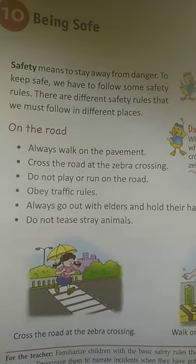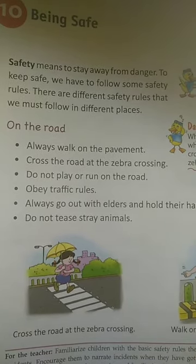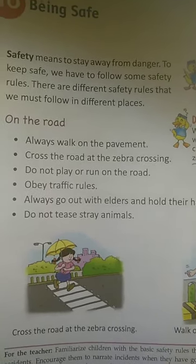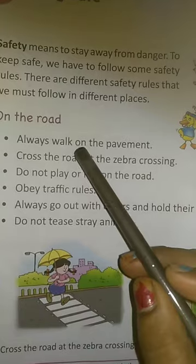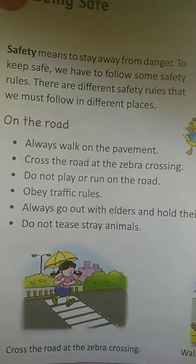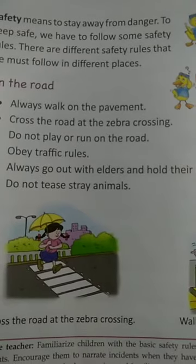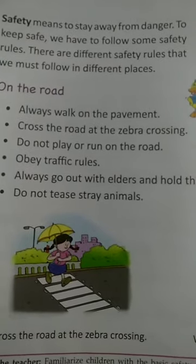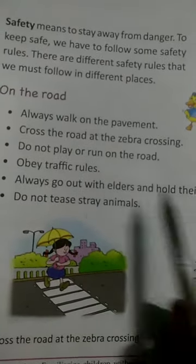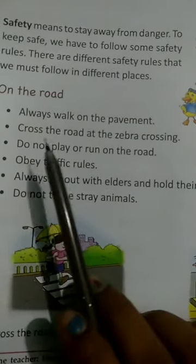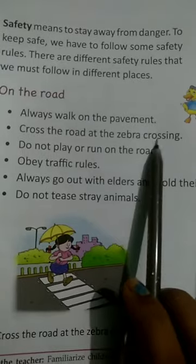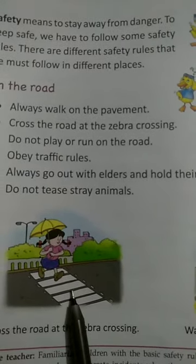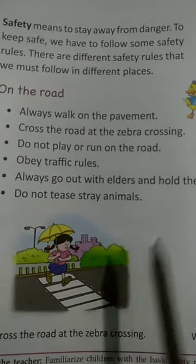On the road, there are some rules. First: always walk on the pavement — pavement means sidewalk. We should always walk on the side of the road. Second safety rule: cross the road at the zebra crossing. Have you ever seen this line on the road? That is the zebra crossing.